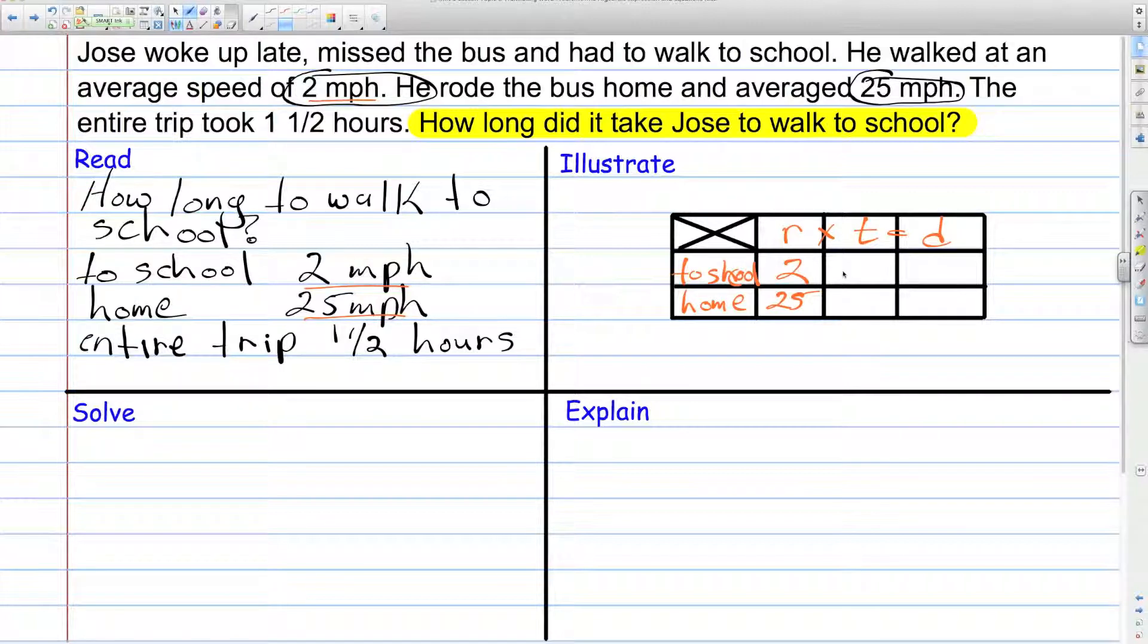Now, the time, that's where it gets a little tricky. The entire trip from home to school and then back again, round trip took one and a half hours. I'm going to write that as a decimal. 1.5 hours. That's how long it took. So, the whole trip took 1.5 hours. So, we take a look at the question. How long to walk to school? That's what we're being asked to find. So, that's where we want to put our variable.